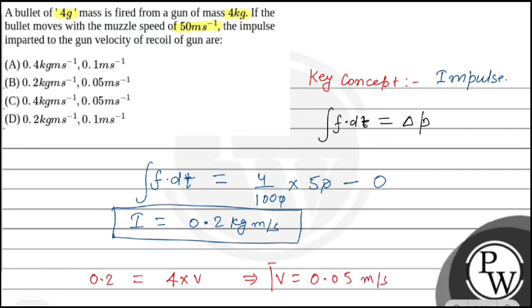So the required speed of the gun is 0.05 m/s, and the impulse is 0.2 kg·m/s. Our correct option is C. Hope you understood it well. All the best.